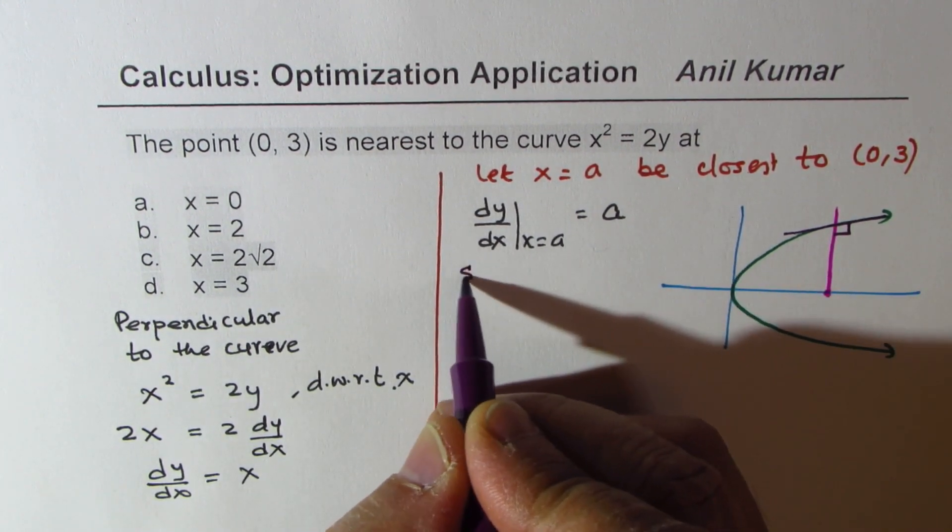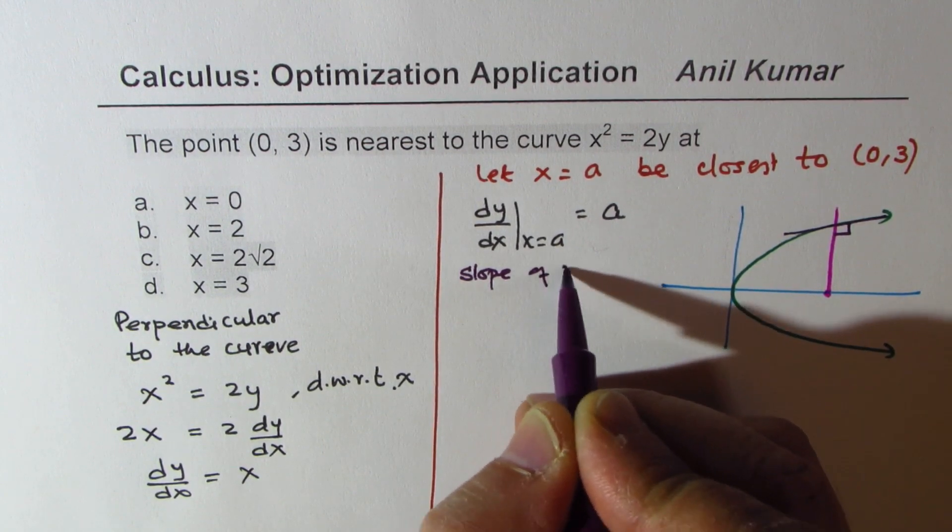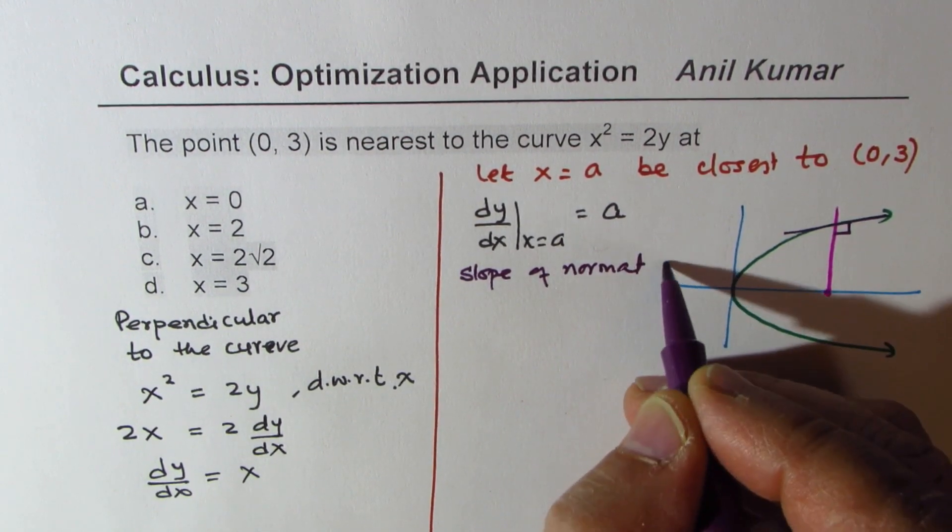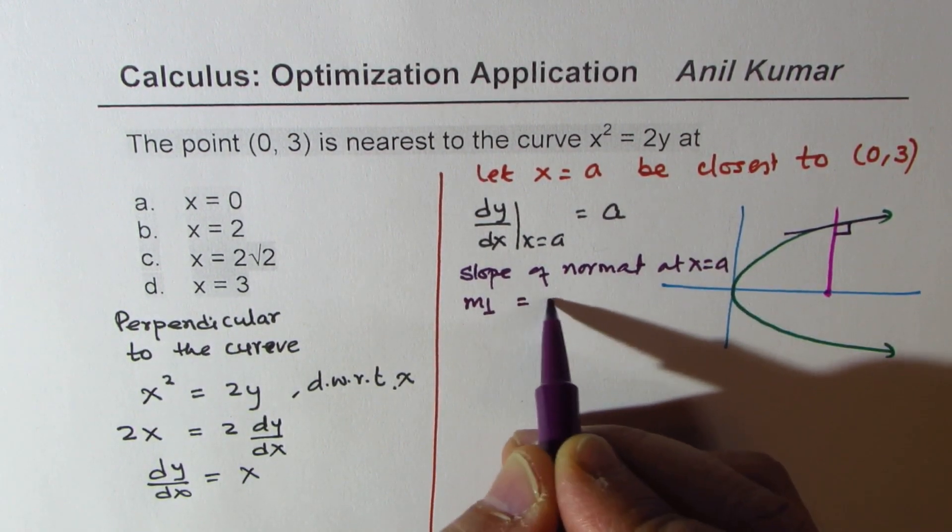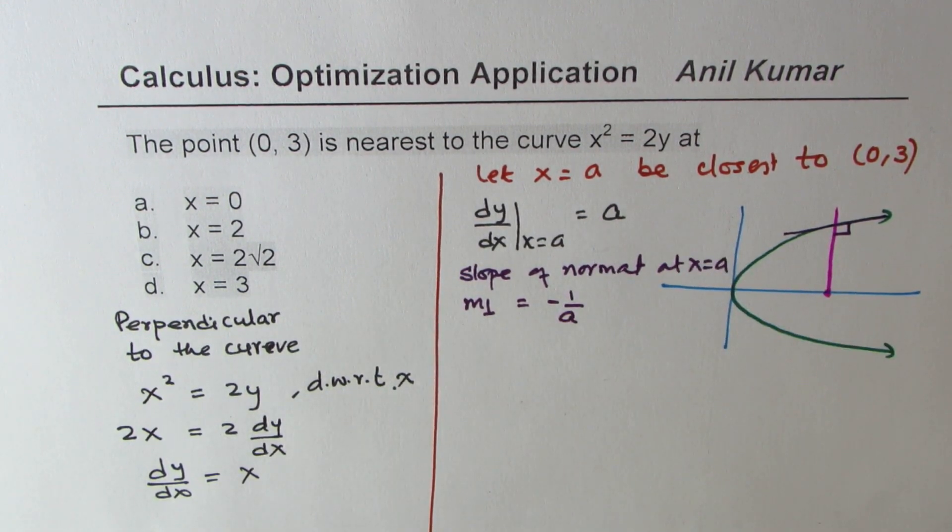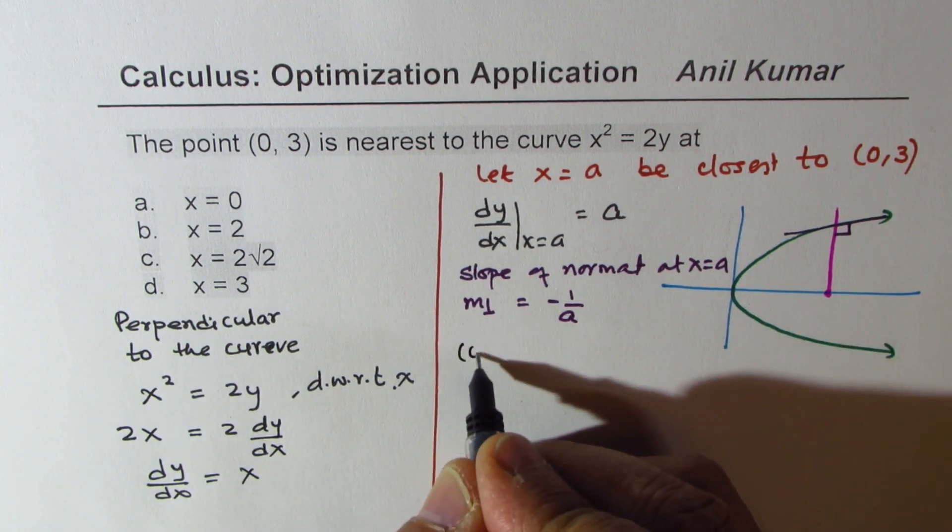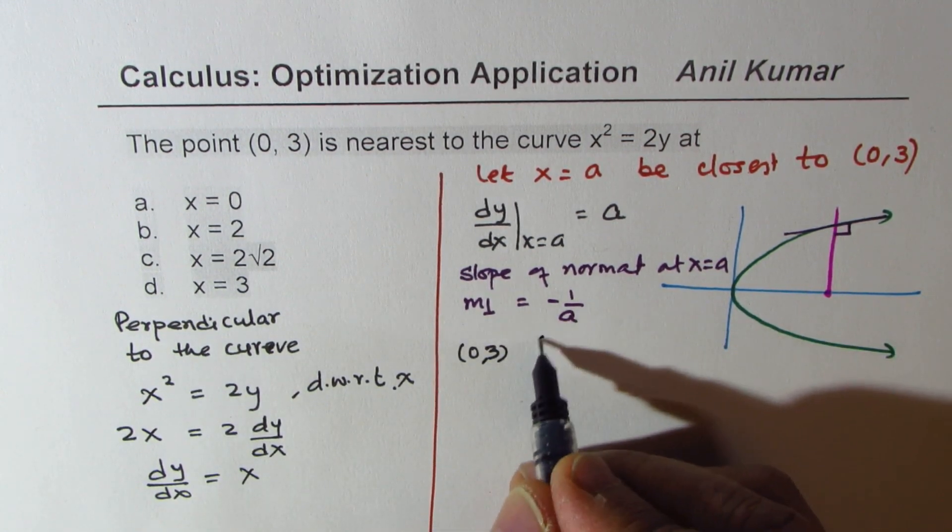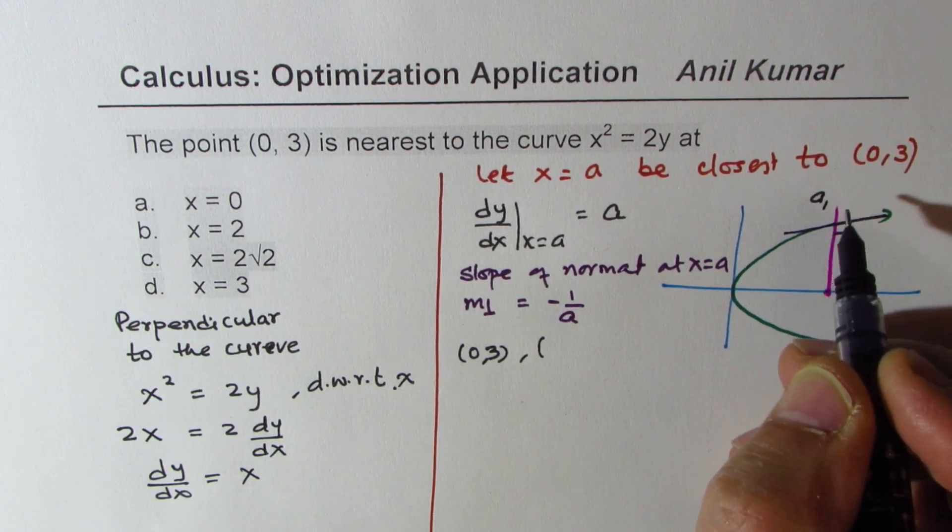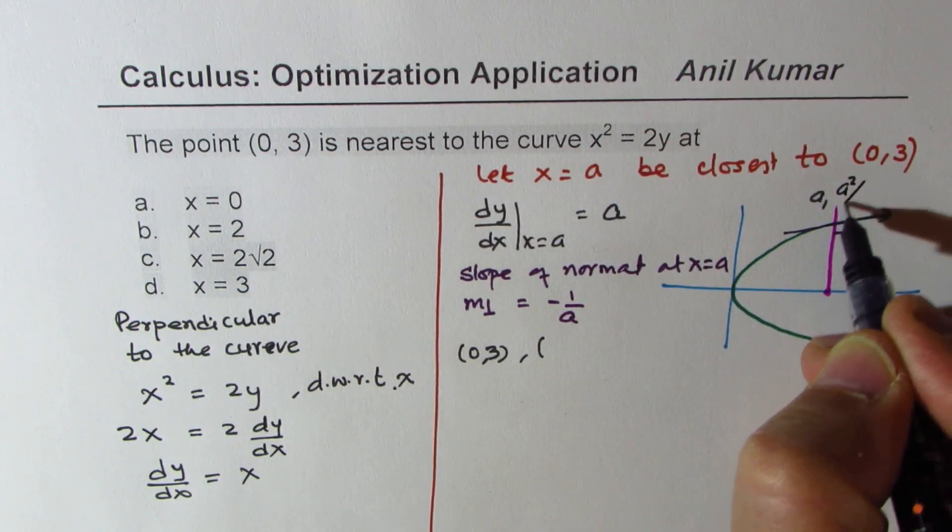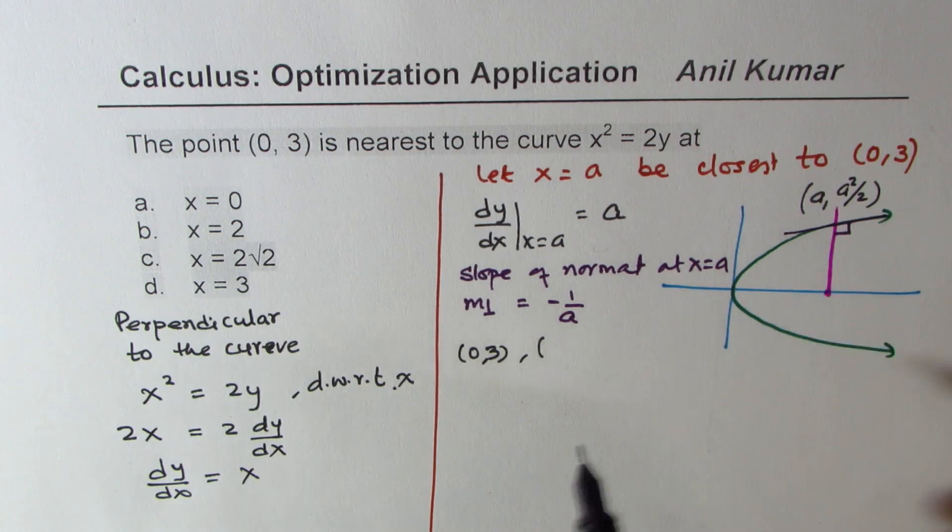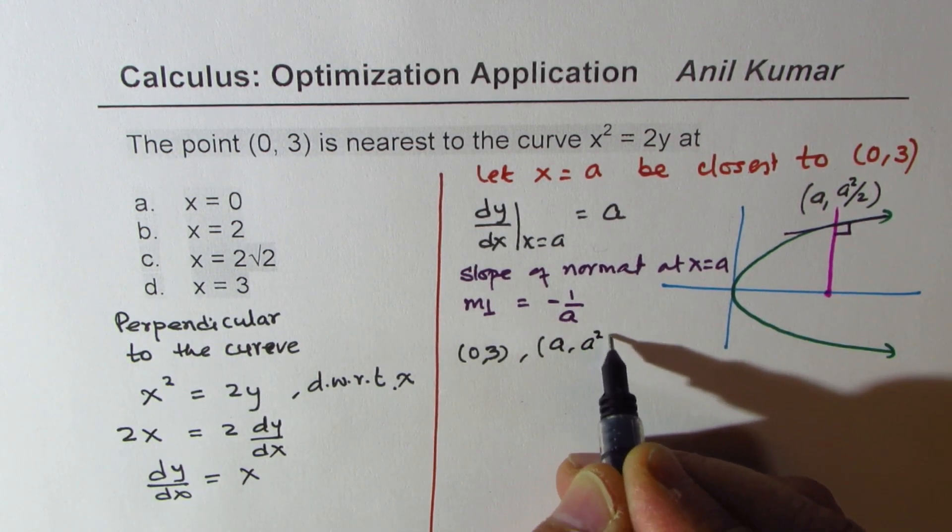So basically it is normal to the tangent. What is the slope of the normal at x = a? The slope of perpendicular will be -1/a. That is the slope. Now we are already given a point which is (0, 3). If a is the x-value on the curve, then y = a²/2. So that becomes the point on the curve: (a, a²/2).